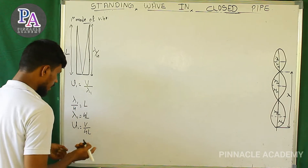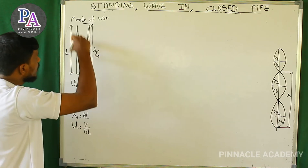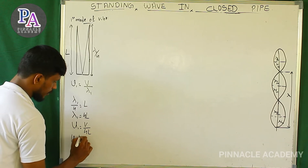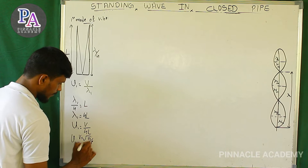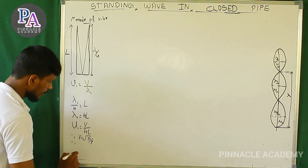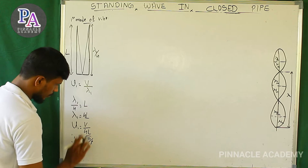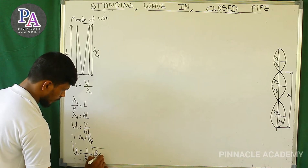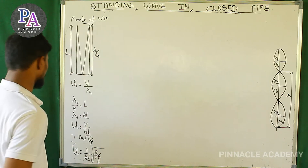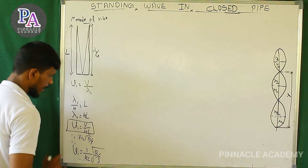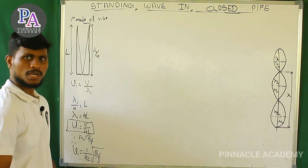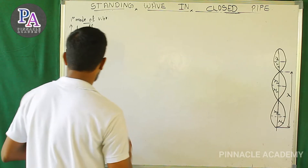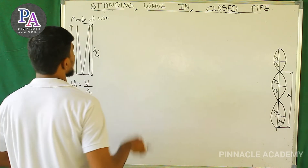ν₁ is equal to v by 4L, where v equals root of B by rho. So ν₁ equals 1 by 4L times root of B by rho. For the closed pipe we have a node at the closed end and an antinode at the open end, giving lambda by 4 pattern.